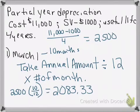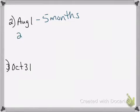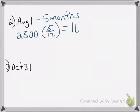Let's look at a different month — say it was August 1st instead of March 1st. Starting August 1st, we count: August, September, October, November, December — that is five months. So we take the annual amount of $2,500, multiply by 5, and divide by 12. That gives us $1,041.67 as depreciation for that partial year.